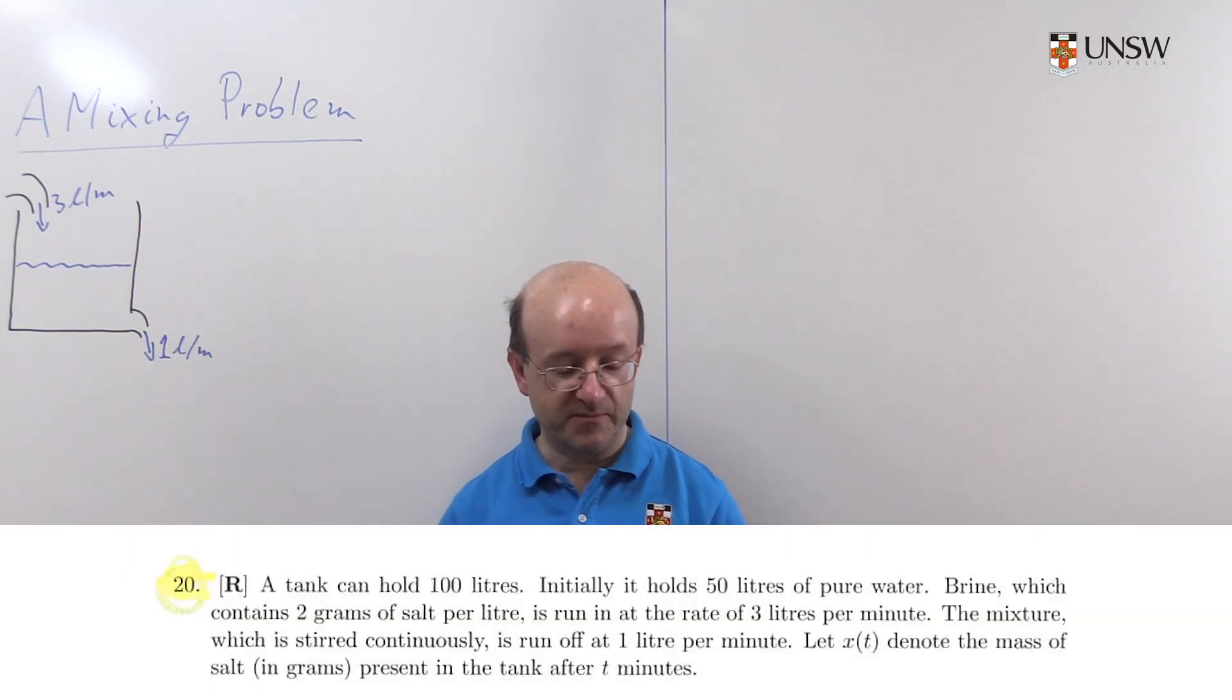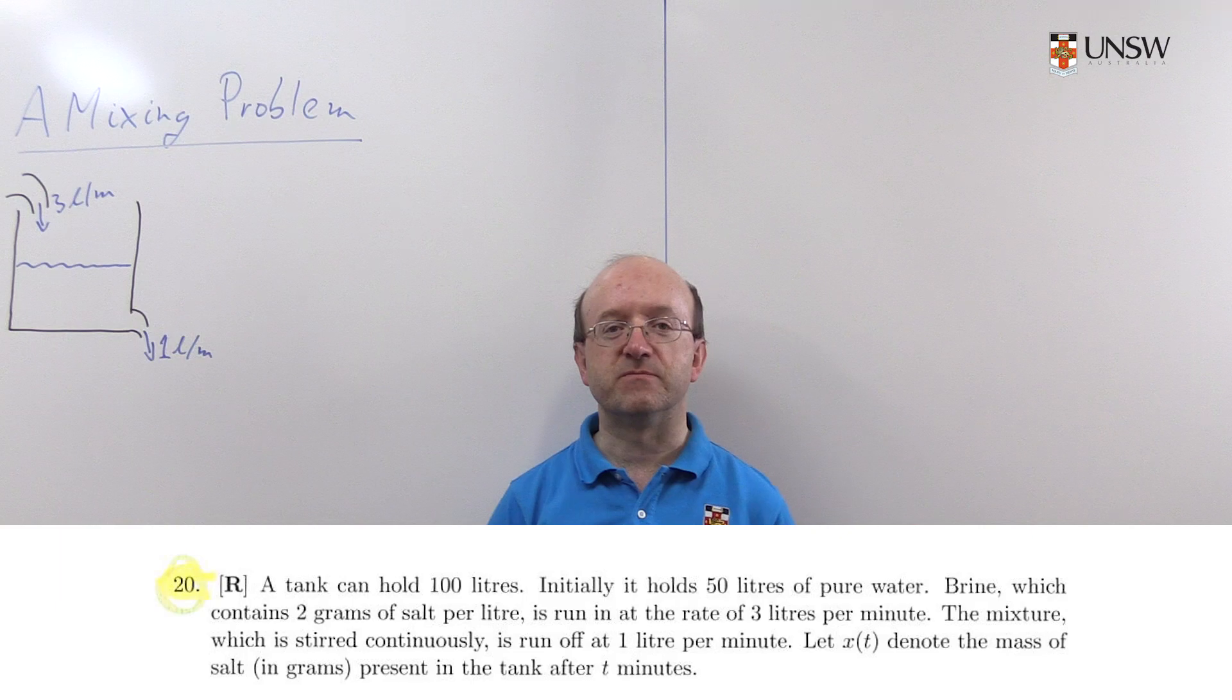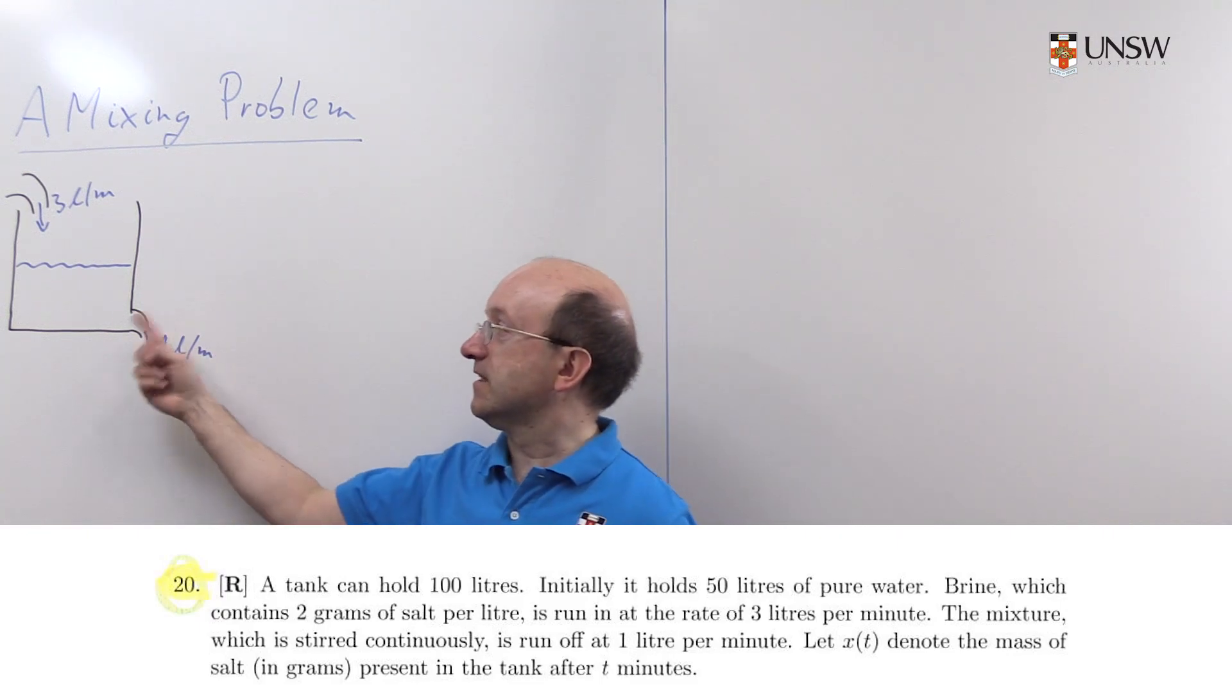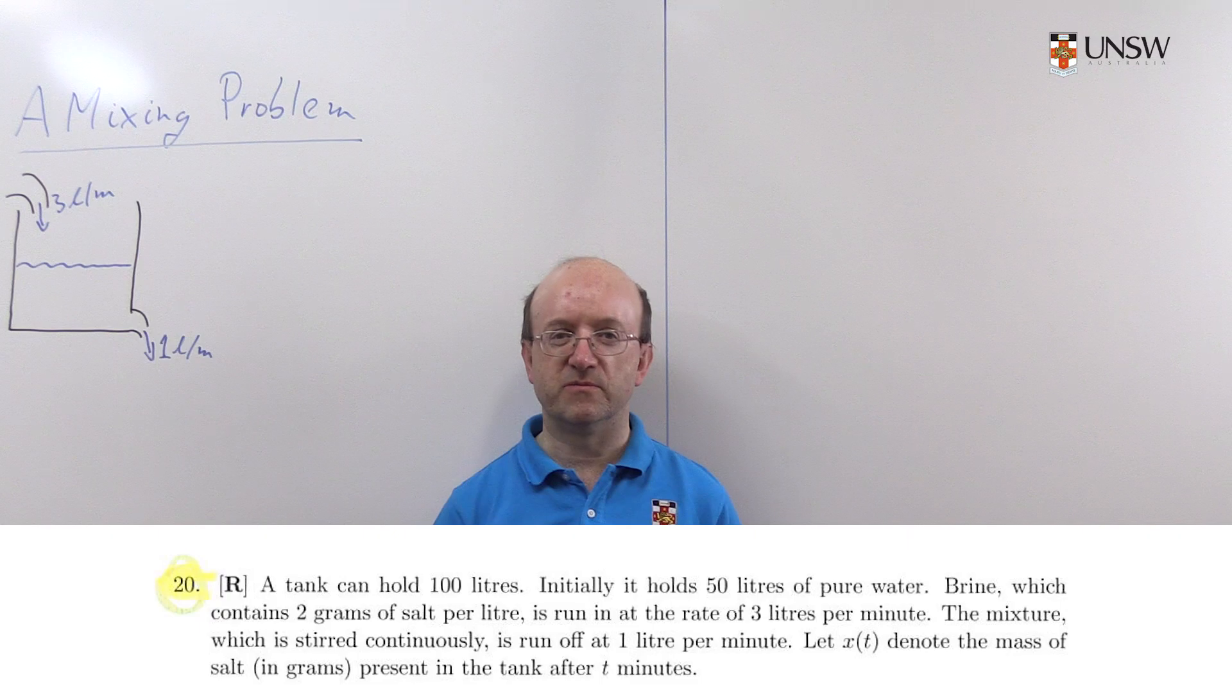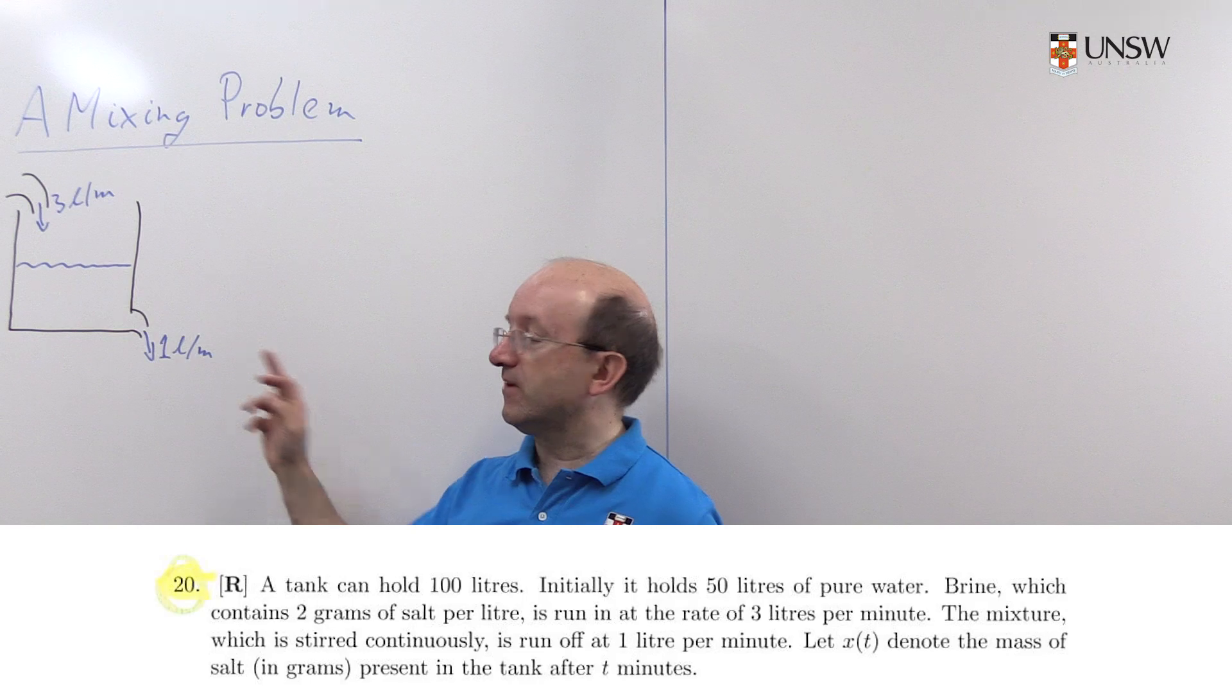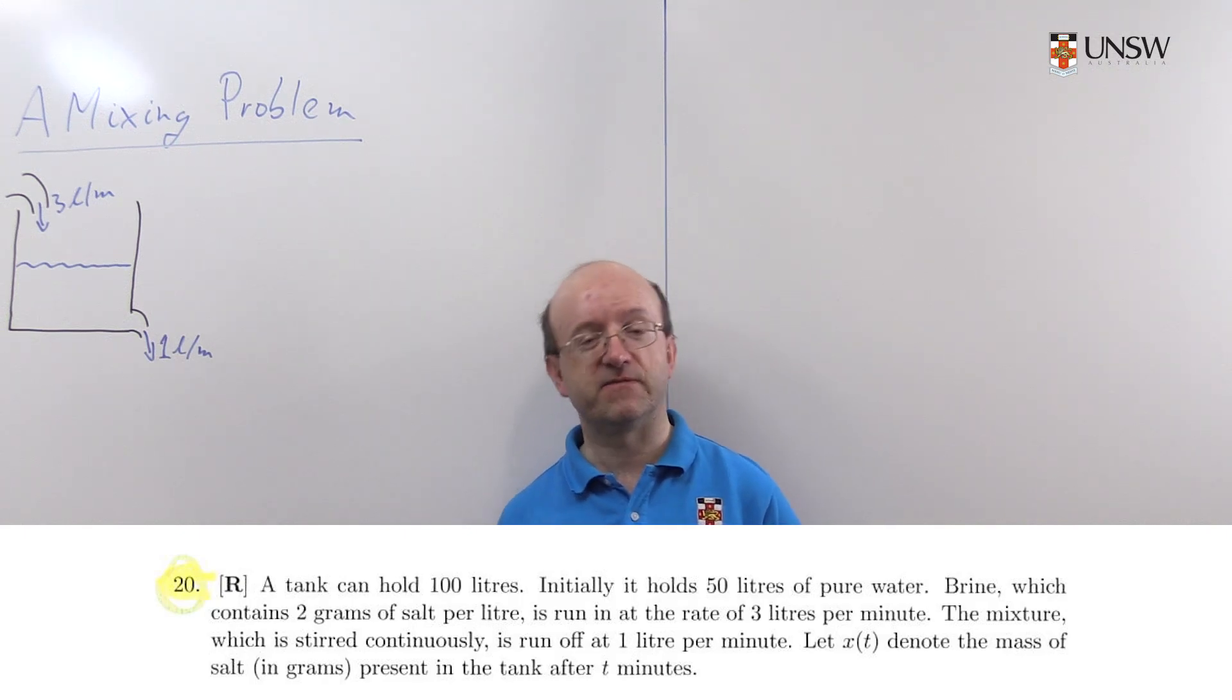In this particular mixing problem, what we've got is a tank that's to hold at most 100 litres, and initially it's got 50 litres of pure water inside it. Brine, that's a mixture of salt and water, is run in at a rate of 3 litres a minute, and this brine contains 2 grams of salt per litre. The mixture is then stirred continuously. In mixing problems we usually assume that mixtures are stirred continuously, so that we don't have to worry about concentrations being different in different parts of the vessel. So the mixture is stirred and then run off at 1 litre a minute. Our problem here is twofold: we're asked to set up a differential equation to model this system, and then to work out exactly how much salt there is in the tank at the point where it overflows.